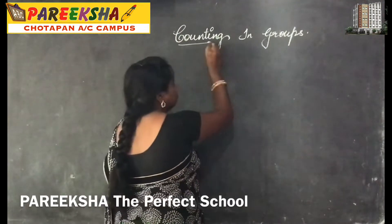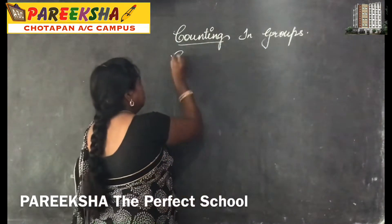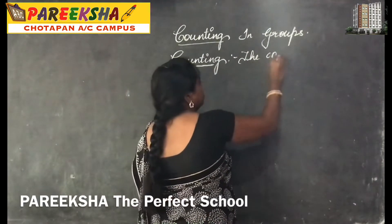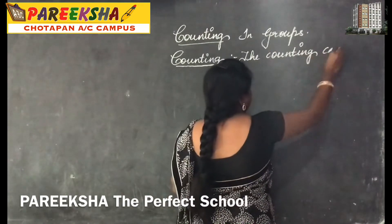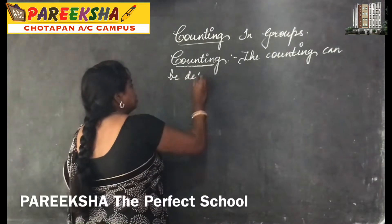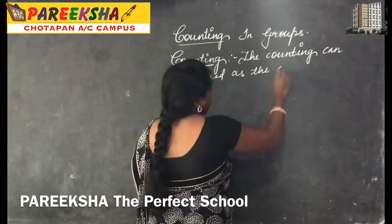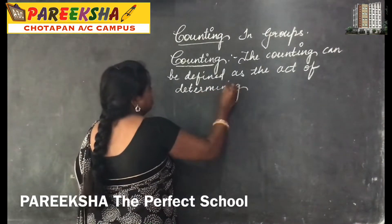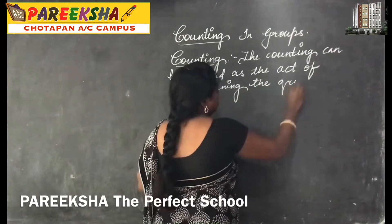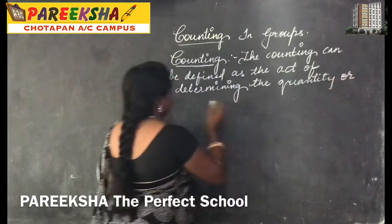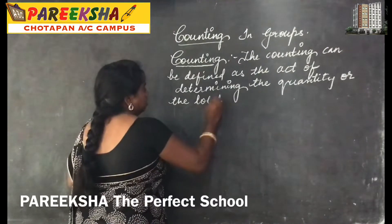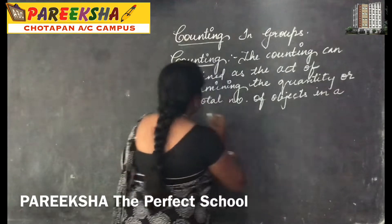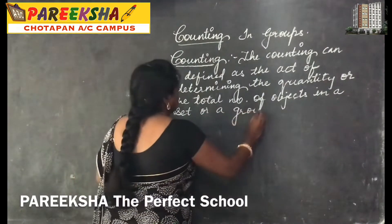Let us know the definition of counting. The counting can be defined as the act of determining the quantity or the total number of objects in a set or a group. This is the definition of counting.